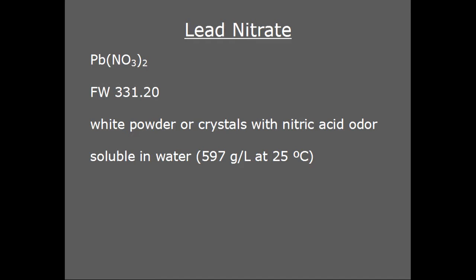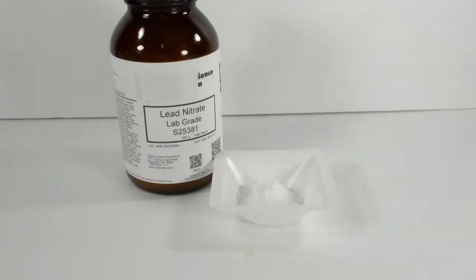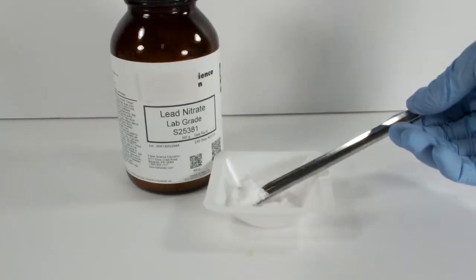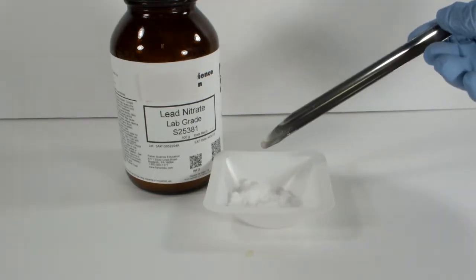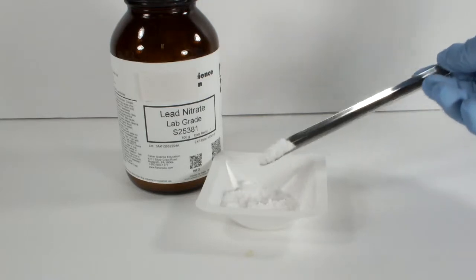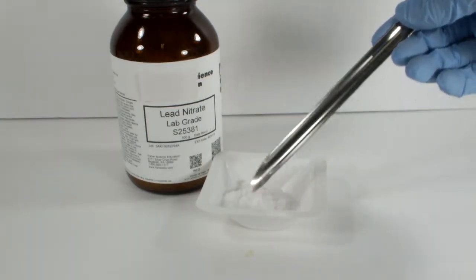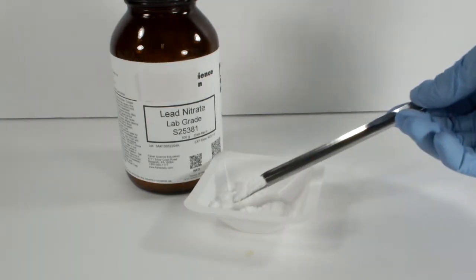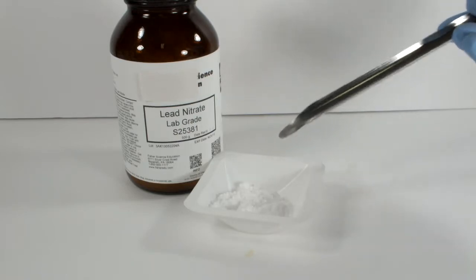Lead acetate is the only other common lead compound that is readily soluble in water. The crystalline product I have clumps up very easily in storage, but it also breaks up readily. It's very dense, and it seems like the clumping is just gravity pulling the crystals together, rather than absorption of moisture or any of the other reasons that things tend to clump.